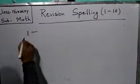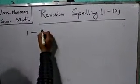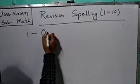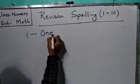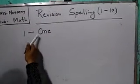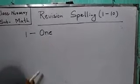1. This number is 1. Now, we will write its spelling. O, N, E. One. Clear? O, N, E. One.